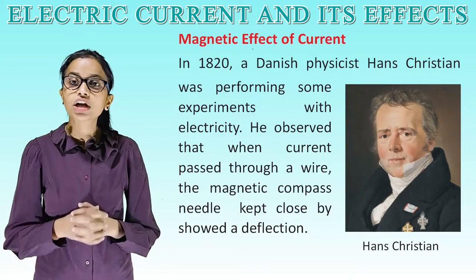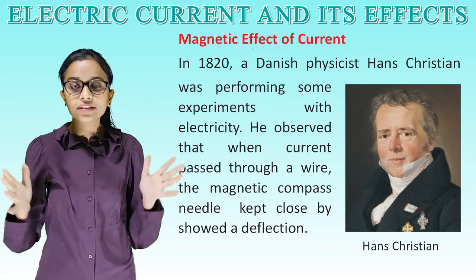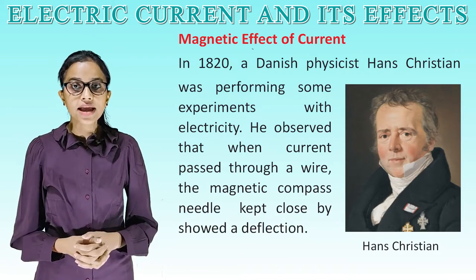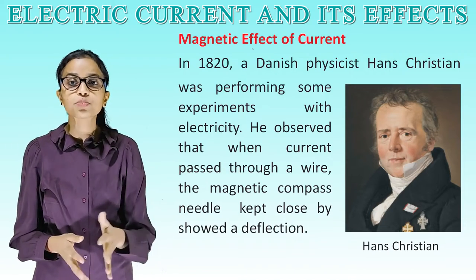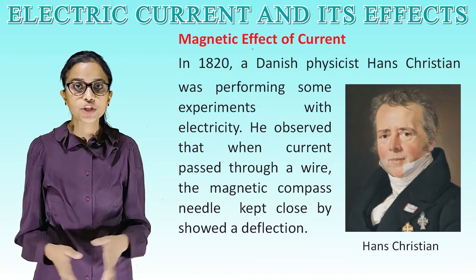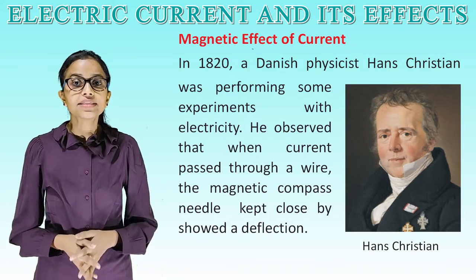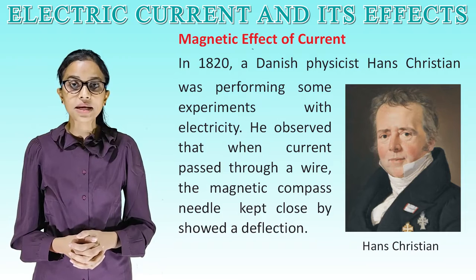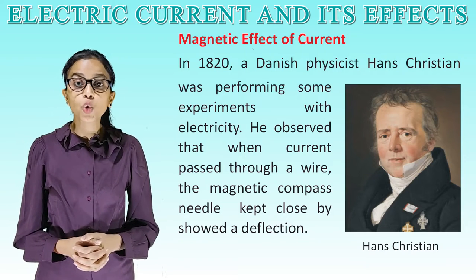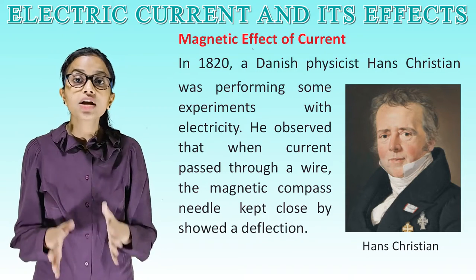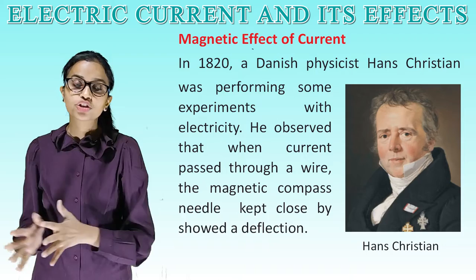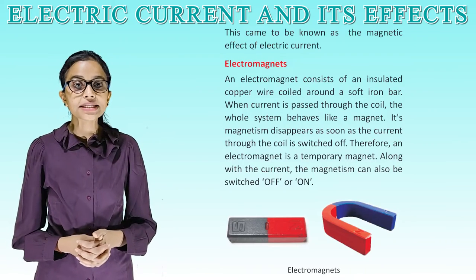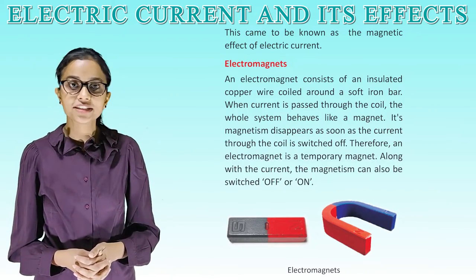Magnetic effect of current. In 1820, a Danish physicist, Hans Christian Oersted, was performing some experiments with electricity. He observed that when current passed through a wire, a magnetic compass needle kept close by showed a deflection. This came to be known as the magnetic effect of electric current.